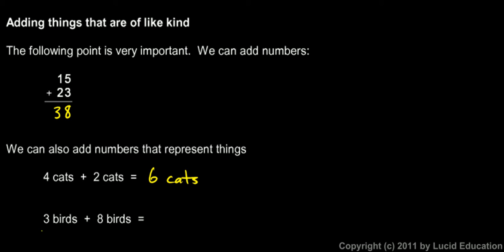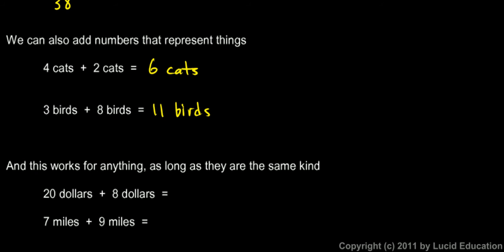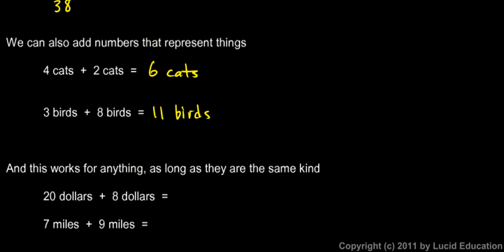Same thing here. Three birds plus eight birds is eleven birds. And this works for basically anything as long as they are things of the same kind. So twenty dollars plus eight dollars. If you have twenty dollars and you get eight more, then it's very clear that you have twenty-eight dollars.